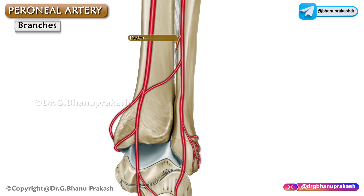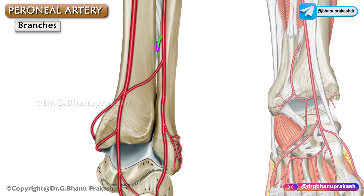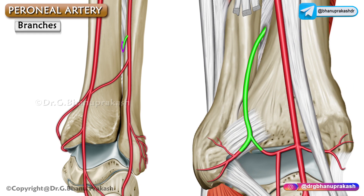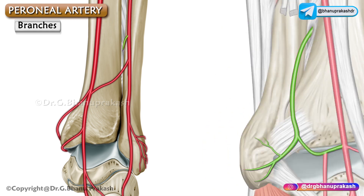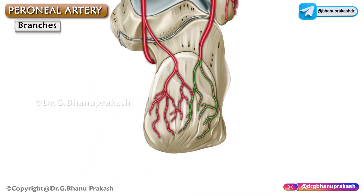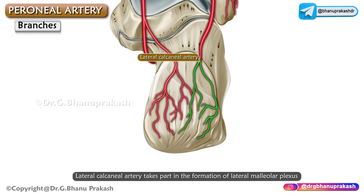Finally, the perforating branch, which is a very important branch — it is the largest and pierces the interosseous membrane, appears in the anterior compartment of the leg, and terminates by anastomosing with the malleolar branches of the anterior tibial as well as the dorsalis pedis arteries. The last branch is the lateral calcaneal artery, which is the terminal branch of the peroneal artery and takes part in the formation of the lateral malleolar network.